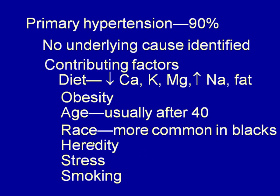Some risk factors for hypertension cannot be controlled — genetics, race, and aging. But others are lifestyle choices: you can control your diet, your weight, manage stress, and choose not to smoke. If you have a family history or racial predisposition to hypertension, these lifestyle choices may help delay or even prevent its onset.